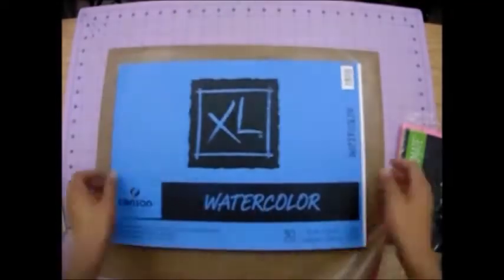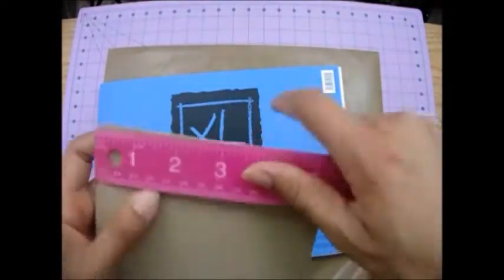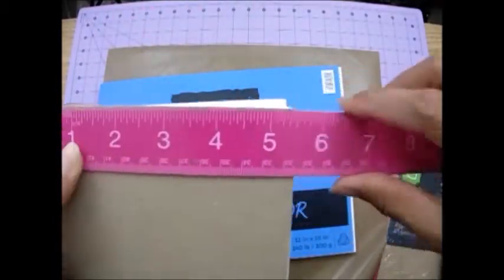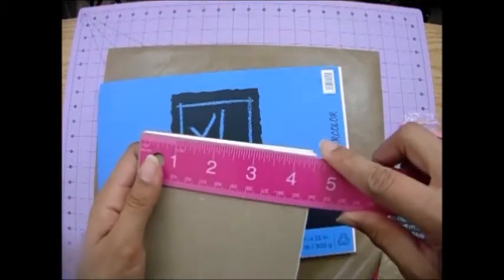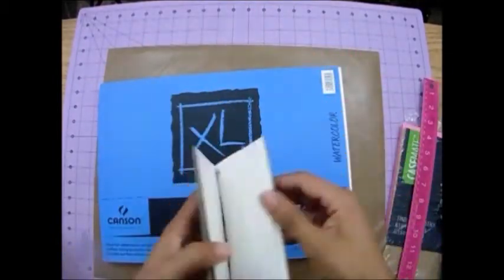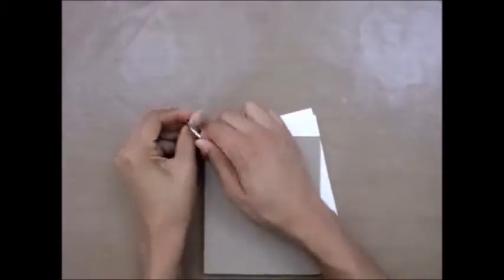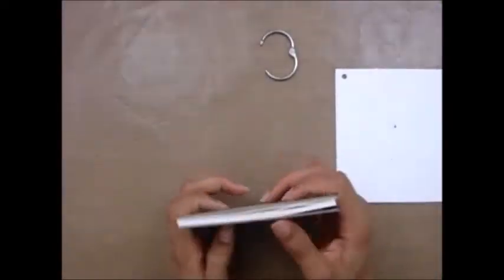I decided to glue two together, and the measurements that I used were four and a half by five and a half. Then I made a hole on all the pages and put a ring on it so you can open it, take the pages out, and work on it.